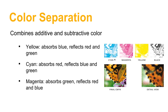Cyan works the same way — it absorbs the red light and reflects the blue and the green. A combination of blue plus green looks like cyan to us. Magenta is the same thing: it absorbs green and reflects the red and blue. Red plus blue together looks like magenta to our eye.